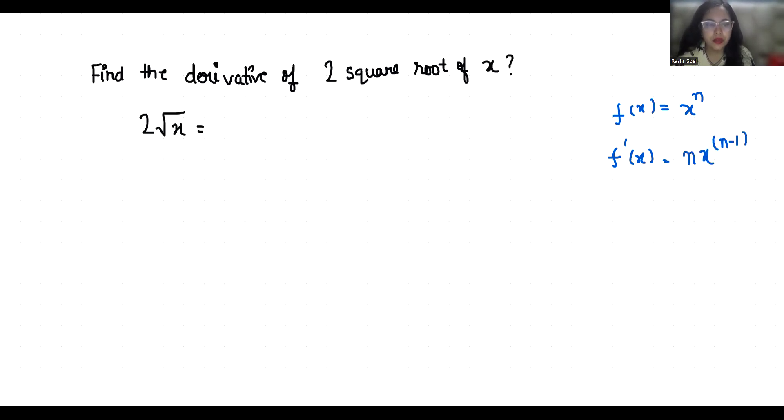In this case, f(x) = 2√x. We can write √x as x^(1/2). So f'(x) becomes 2 times (1/2)·x^(1/2 - 1).